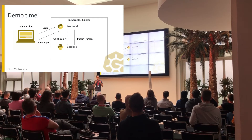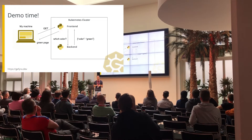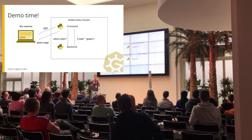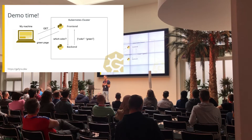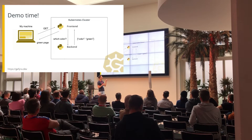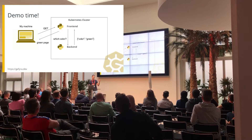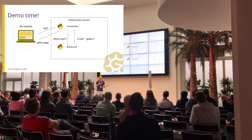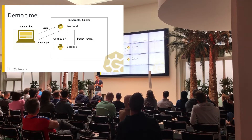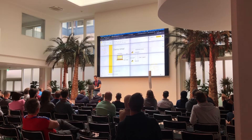Now it's demo time. I've set up a pretty simple demo. I have my laptop and a Kubernetes cluster online with two pods: a front-end pod and a back-end pod. The back-end has one route — a web app that returns a JSON document with a color. The front-end requests that color from the back-end, generates an HTML paragraph with a background color, and returns it to the browser.